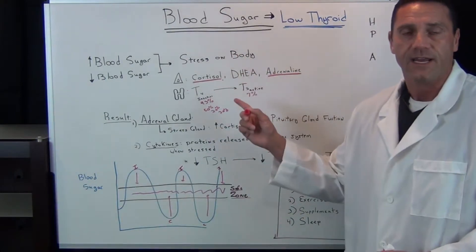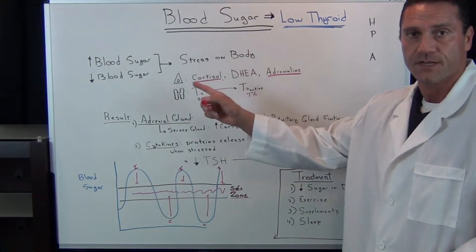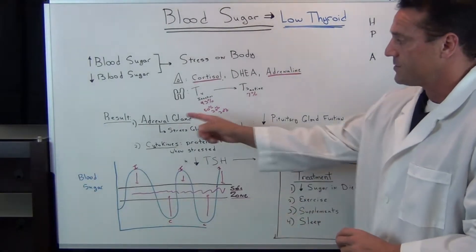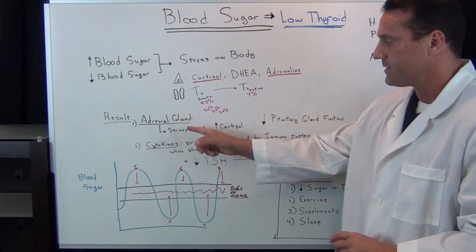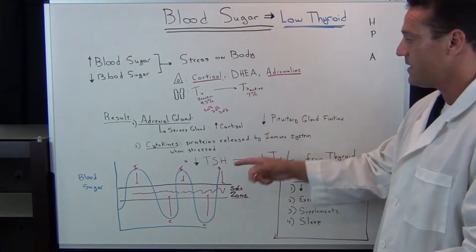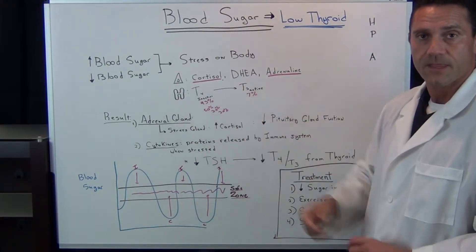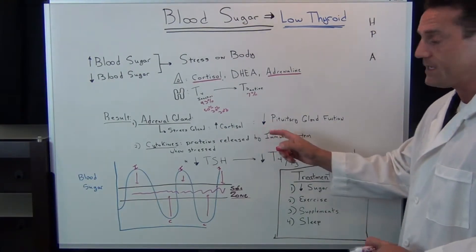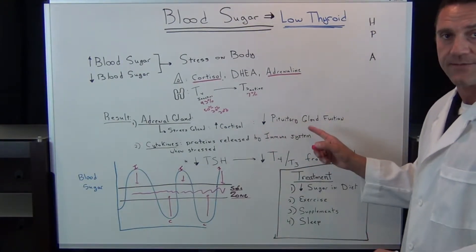When we have chronic stress on the body due to fluctuations in blood sugar, it slows the way everything works. The end result is, with the adrenal glands, too much stress on that gland will increase the cortisol in the blood, which reduces the pituitary gland function.